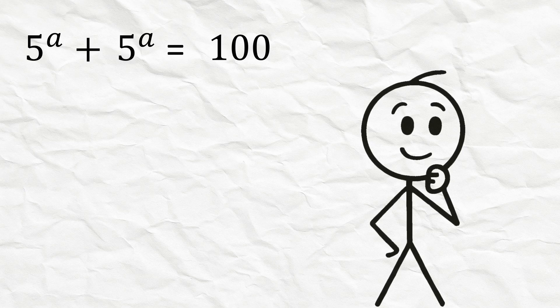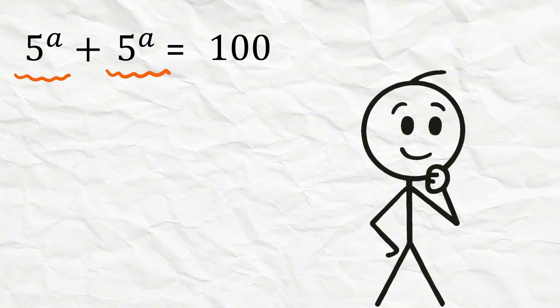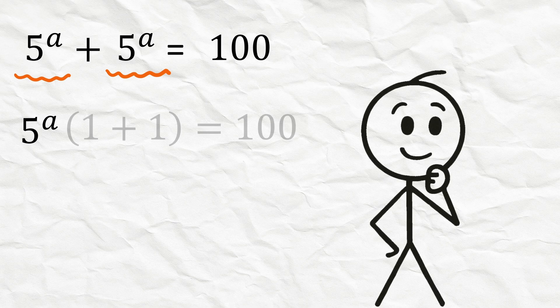As a first step, take 5 raised to the power of a as common form from both these expressions. We can write 5 raised to the power of a times 1 plus 1 equals 100, so we get 2 times 5 raised to the power of a equals 100.